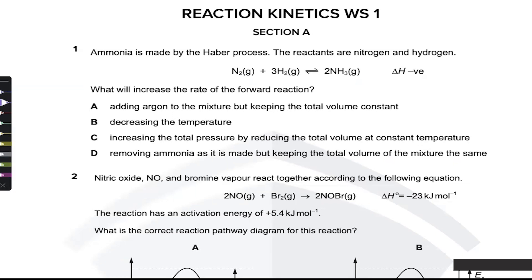Increasing the total pressure by reducing the total volume at constant temperature means kinetic energy distribution stays the same. We're decreasing the volume, so pressure increases. The equilibrium tries to decrease the pressure, and that depends on the number of gaseous moles. Less gaseous moles on the right side — by Avogadro's law — means this drives equilibrium forward and also increases the rate. Removing ammonia while keeping volume the same decreases pressure and drives equilibrium backwards.